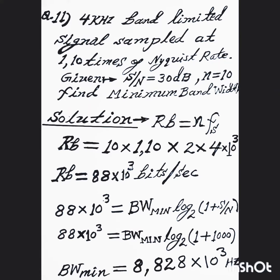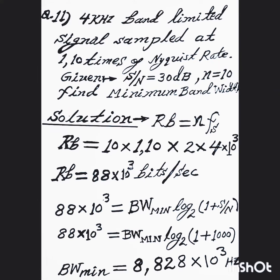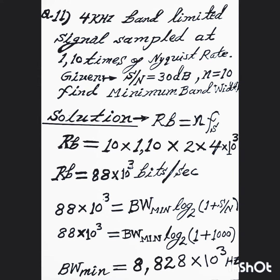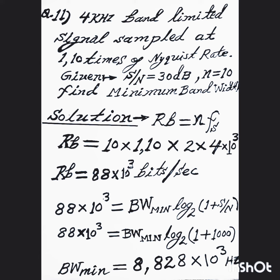Hello. Question 11. A 4KL band-limited signal is sampled at 1.1 times the Nyquist sampling rate. Given signal-to-noise ratio of 30 dB and number of bits n equal to 10, find the minimum bandwidth of the signal.